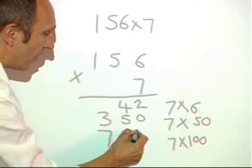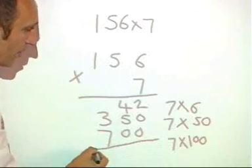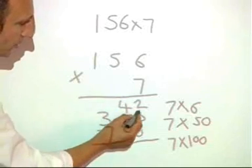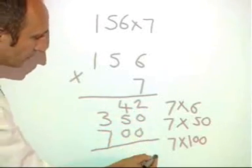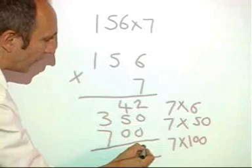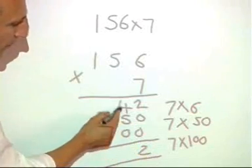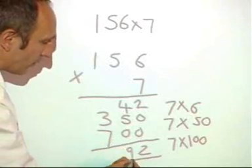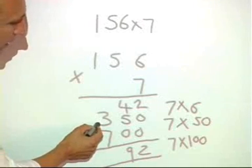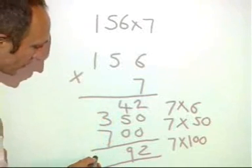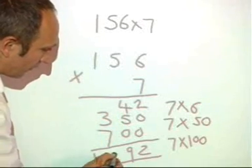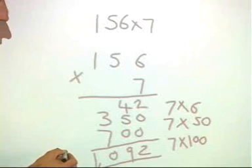And then it's a relatively straightforward process of adding these columns. So, in the twos column, I have 2. 50 and 40 make 90. And then 700 and 300 means that I go into the thousands column. So, the answer is 1,092.